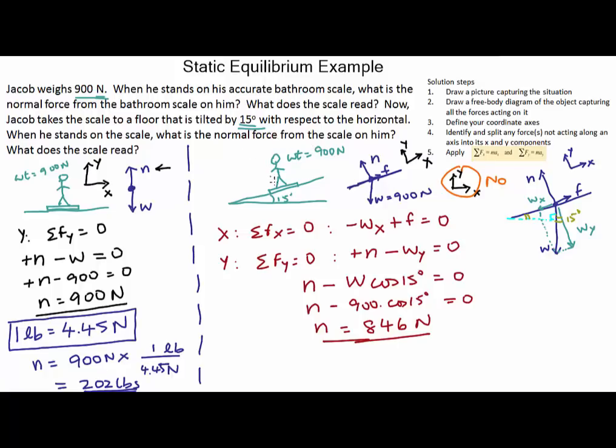Now, what is the force that the scale would read? Once again, the scale would read the force that Jacob applies on the scale, and by Newton's third law, that is equal in magnitude to the force the scale applies back on Jacob, which is nothing but the normal force. So the scale's reading would be the equivalent of 846 newtons, but we would have to go to pounds. Same conversion factor as before, and that gives me 190 pounds. So even though Jacob's actual weight is 202 pounds, this scale is now going to read 190 pounds because we are on a tilted floor, and scales don't read the weight, even though we think they do, they always read the normal force. So that's what I meant by a weight loss trick.